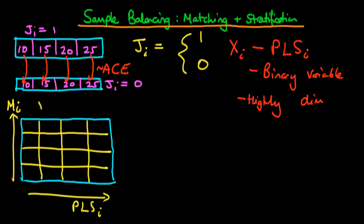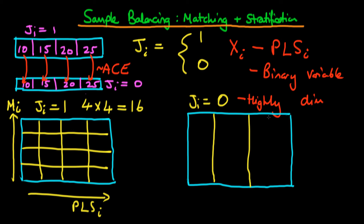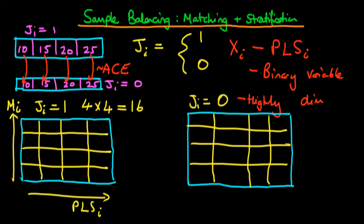If we assume motivation is measured in a continuous manner and we choose four subsamples for our treated group, we can see quickly that stratifying across two variables with four subsamples each gives us four-by-four, or 16 subsamples, which we need to make up corresponding subsamples for in our untreated population. What we would try to do is find corresponding subsamples within the untreated population — four across past year's level of sales and four across motivation. So if we find treated individuals in, say, the top left corner of our sample — call that A — we can compare their mean level of sales with those in the corresponding untreated cell.